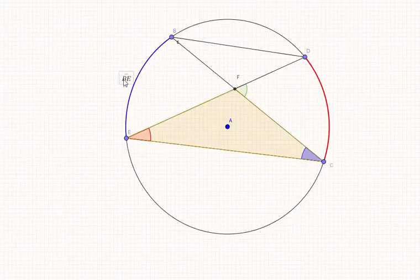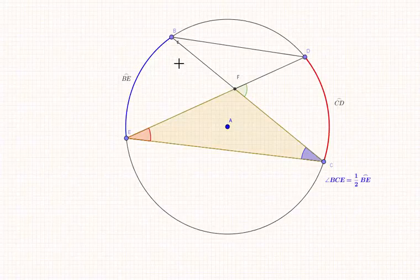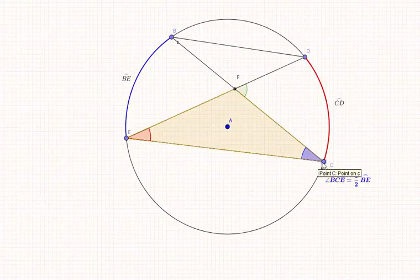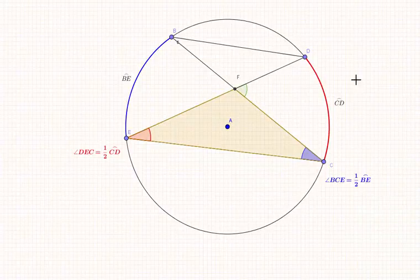We have the same way for angle BCE. It is double of angle C. We can say that angle BCE is equal to half of the arc BE. The inscribed angle C is half of the intercepted arc. We can do the same thing for CD and E.